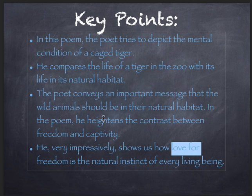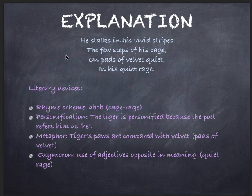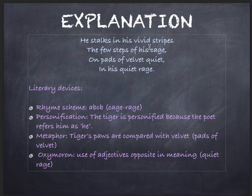The poet is successful in showing us what the value of freedom is. Now, we will move to a line-wise explanation of the poem. The first stanza reads: 'He stalks in his vivid stripes, the few steps of his cage, on pads of velvet quiet, in his quiet rage.'